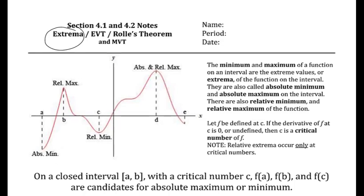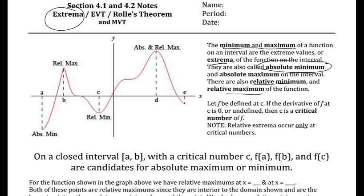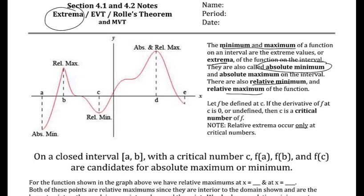An extrema is just a general term for all the maxes and mins. There are really two types: absolute min, which means the very smallest point on the graph, and absolute max, which is the very biggest point. Then there are relative mins and relative maxes — things that are temporarily a max or temporarily a minimum. All of those make up extrema.